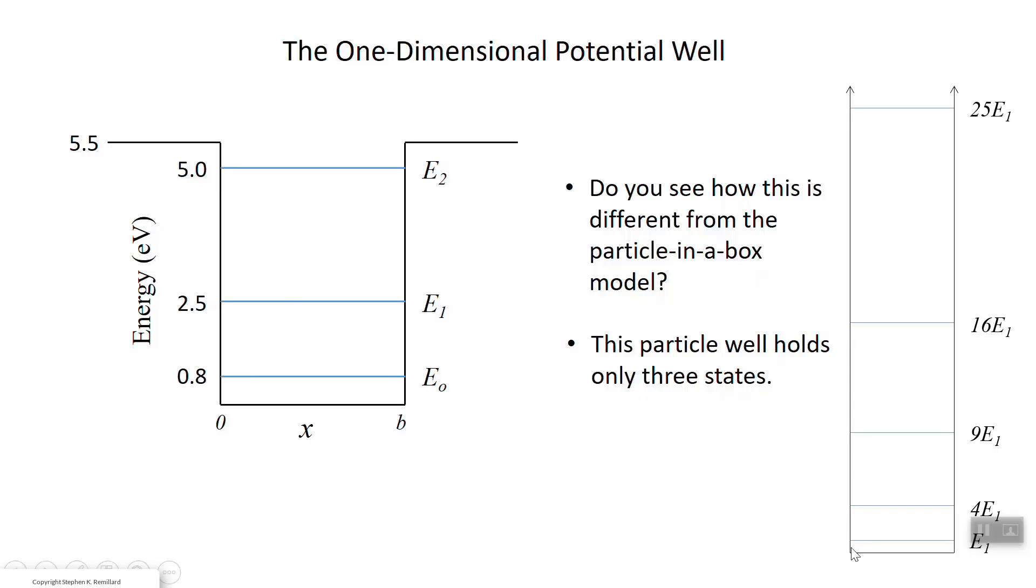This is a hypothetical well that happens to have a depth of 5.5 electron volts, and so these three states fit inside. You notice as you get to higher levels, they get farther apart. It's a lot like the particle in a box. A particle in a box is basically an infinite potential well. You have these energy levels that go as, first the ground state is the lowest energy and the next one goes as n squared E. So when n equals 2, it goes as 2 squared times the energy of the ground state. When n equals 3, it goes as 3 squared times the energy of the ground state.